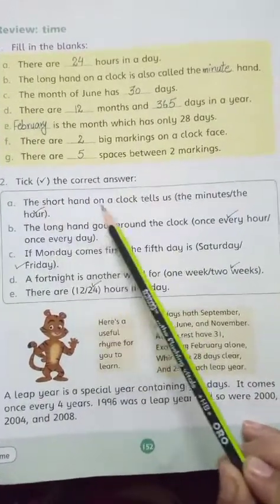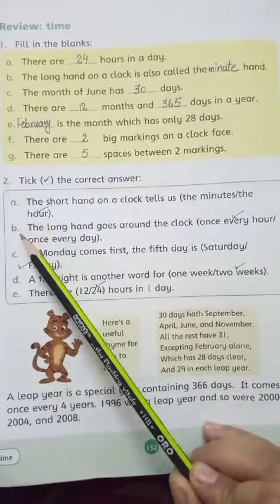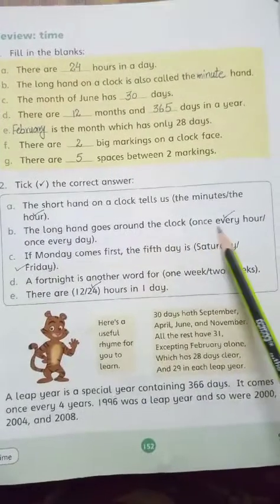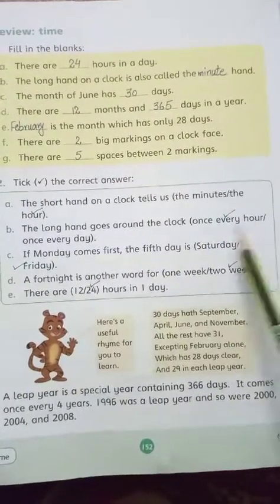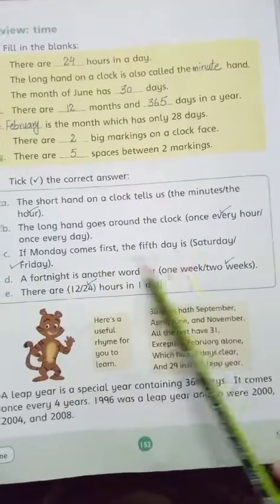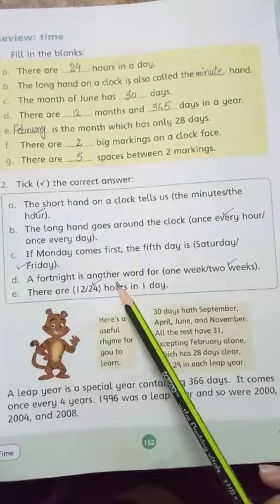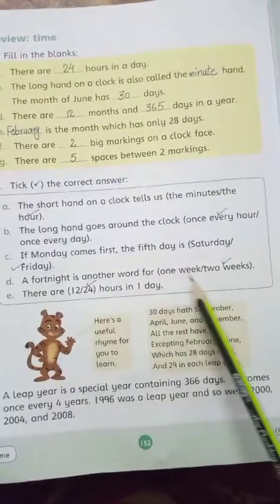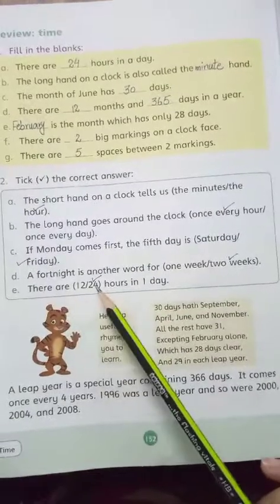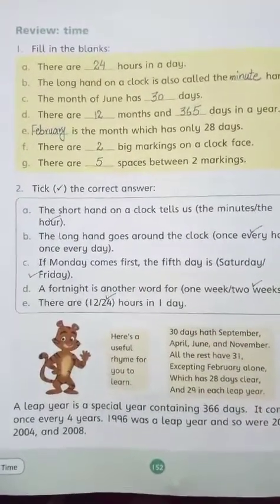Next question, tick the correct answer: The short hand on a clock tells us the hour. The long hand goes around the clock once every hour. If Monday comes first, the fifth day is Friday. A fortnight is another word for two weeks. There are 24 hours in a day. My page 152 is complete.